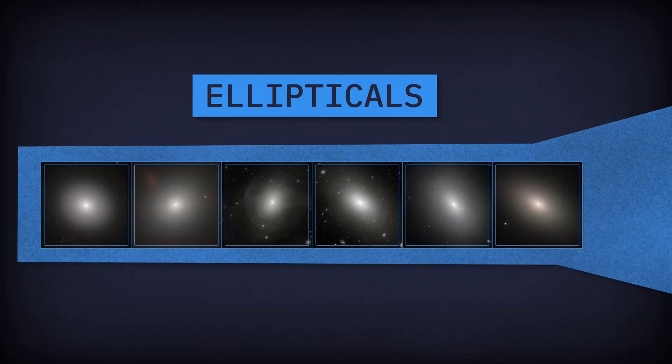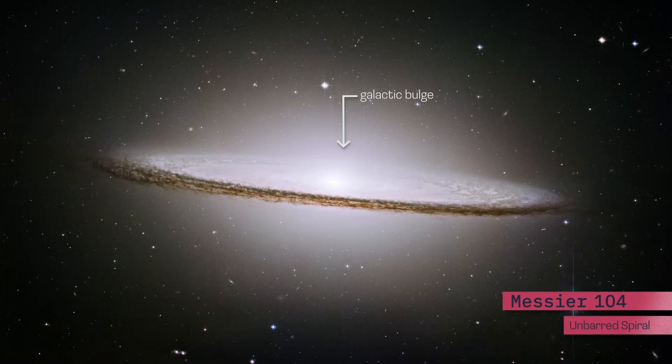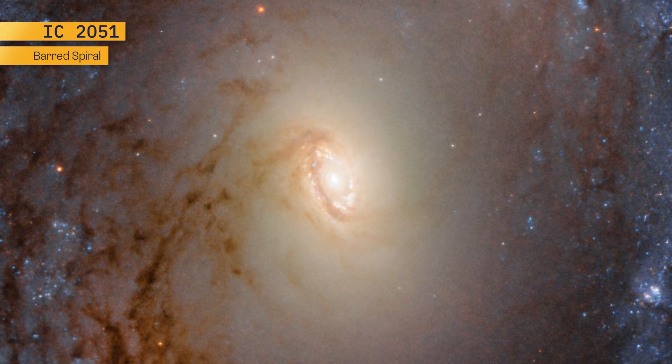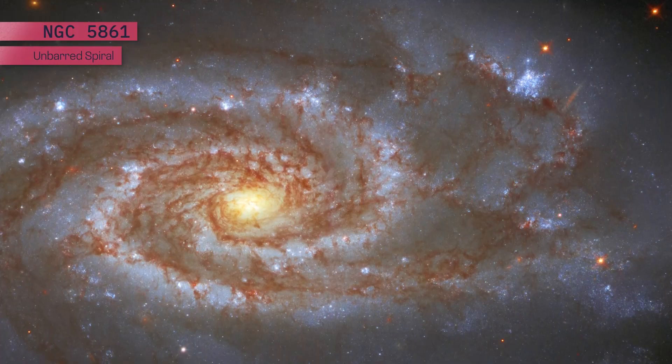The best-known galaxies are spirals. The center of a spiral galaxy has a large, roughly spherical swarm of stars called a bulge. This bulge looks similar to an elliptical galaxy, but spirals differ from ellipticals because they rotate. Rotation gives spiral galaxies the flat disk that holds their spiral-shaped arms. Unlike ellipticals, spirals have a mix of young and old stars.